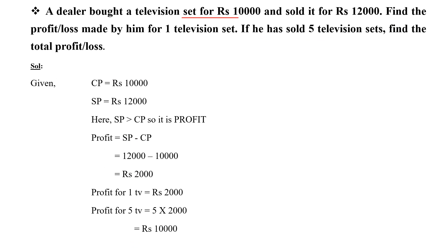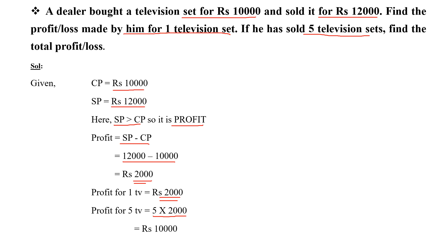A dealer bought a television set for Rs. 10,000 and sold it for Rs. 12,000. Find the profit or loss made by him for one television set. If he sold 5 television sets, find the total profit. For one TV the profit is Rs. 2000. For 5 television sets the total profit is Rs. 10,000.